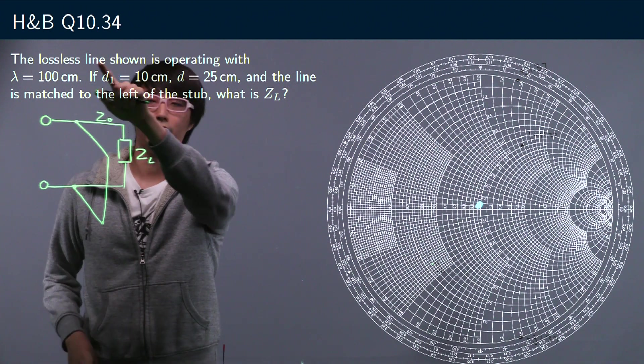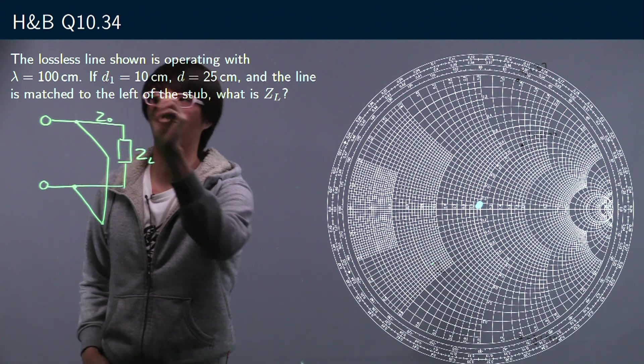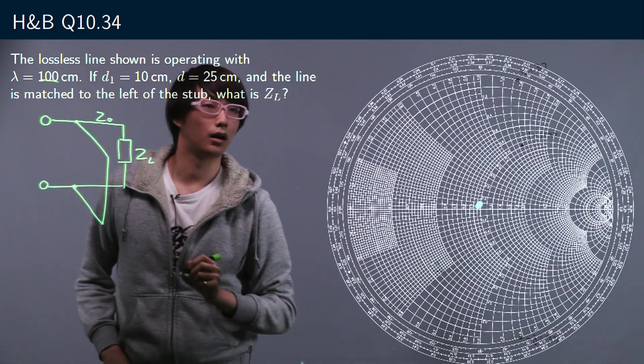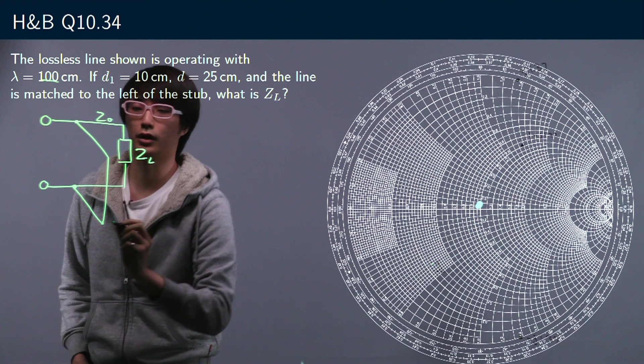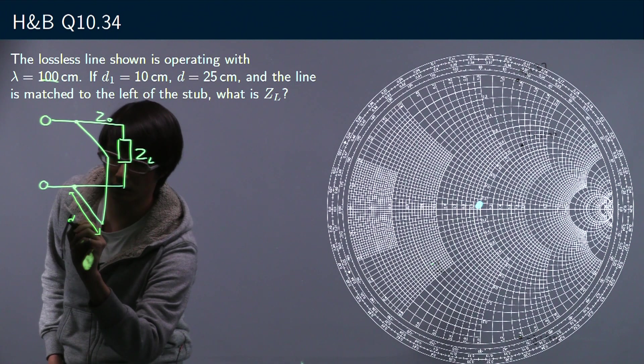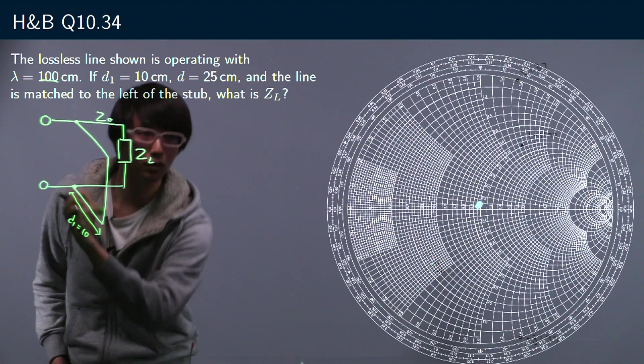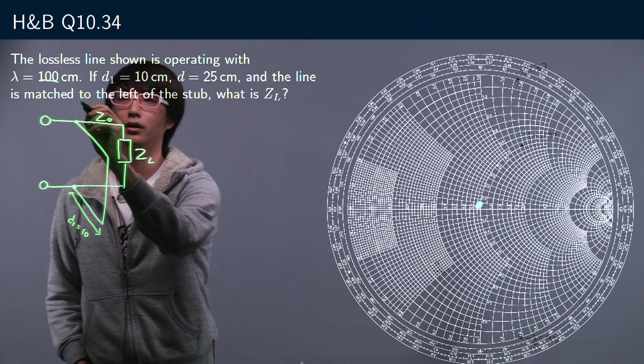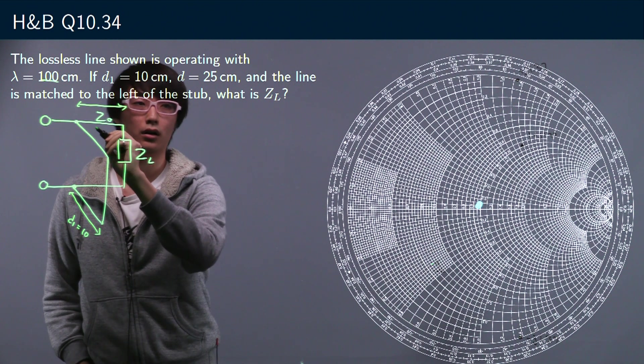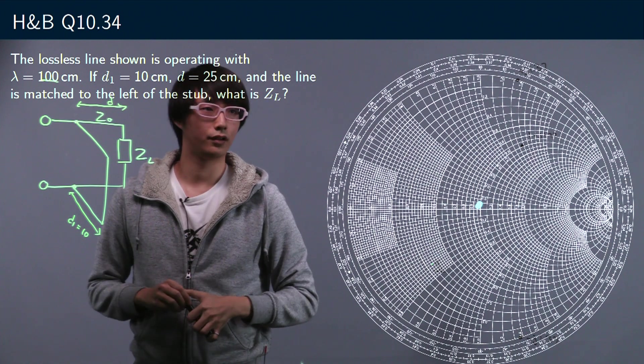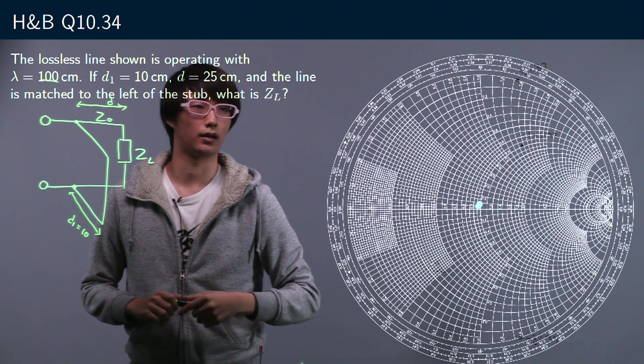The lossless line shown operating with lambda equals 100 centimeters. If d1 equals 10 centimeters, d1 being the length of the stub here, and d equals 25 centimeters, d being this length over here. And the line is matched to the left of the stub. What is ZL?